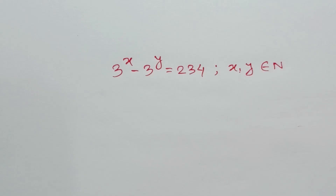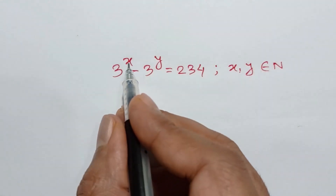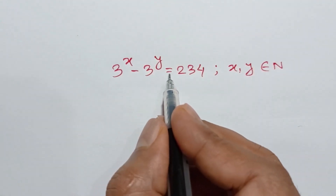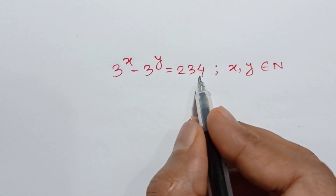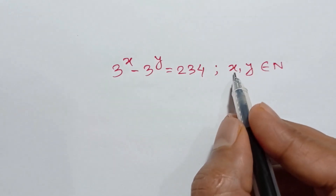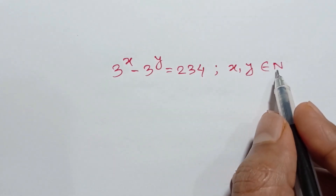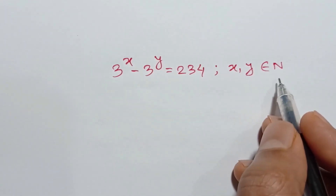Hi everyone. I am going to show how to solve 3 to the power x minus 3 to the power y is equal to 234, where x and y are natural numbers or positive integers.